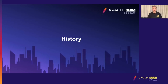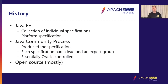I wanted to start with a little history of Jakarta EE, which started with Java EE. Java EE is a collection of individual specifications — like Servlet, JSP, and EJB — and those individual specifications are collected together underneath a platform specification that brings them all together, and that's what defines a full Java EE container.